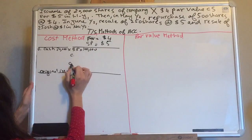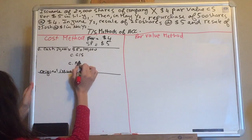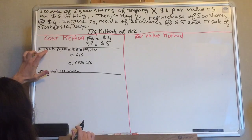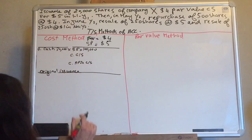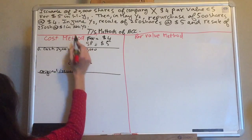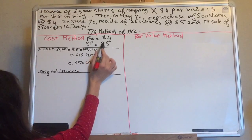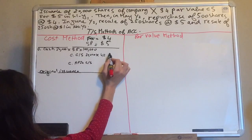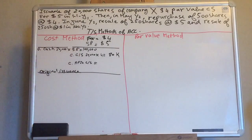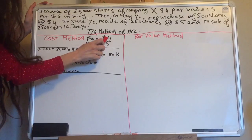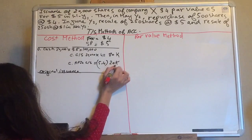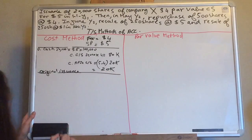Then in the credit, you credit the common stock and you credit the APIC common stock. You credit the common stock for the number of shares times the par value: 20,000 shares times $4 equals $80,000. The APIC common stock is the excess over par: $5 minus $4 times 20,000 shares equals $20,000.